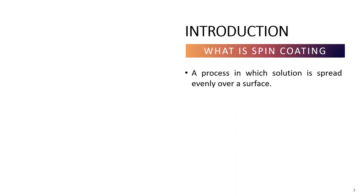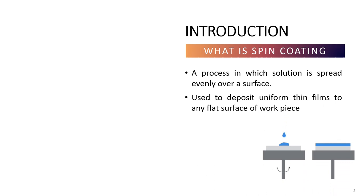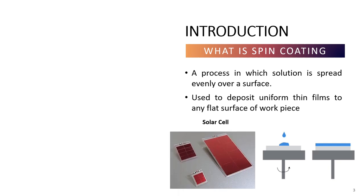Spin coating is a widely used coating method for preparing uniform thin films in many industries, as well as advanced materials functions such as sensors, solar cells, and filters.